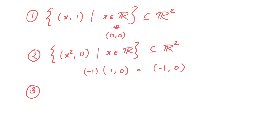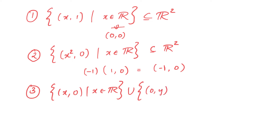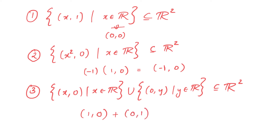Now consider a third example. The third example is the set of all (x, 0) such that x belongs to R, union the set of all (0, y) such that y belongs to R. The union of these two sets is once again contained in R². Notice that this set contains the additive identity (0, 0) and is also closed under scalar multiplication. However, notice that (1, 0) belongs to this set and (0, 1) also belongs to this set, but the sum of these two, which is (1, 1), does not belong to this set. Thus this set is not closed under addition, and therefore it is not a vector subspace of R².